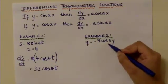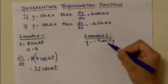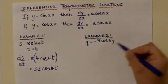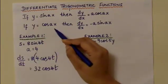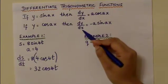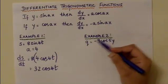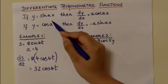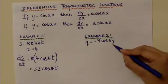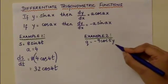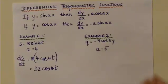Similarly, for the cosine function: q equals minus 9 cos 5y. To differentiate this, we use the formula: if y equals cos ax, then dy over dx equals minus a sin ax. In this case, a is the coefficient of the variable y, which is 5. Therefore a equals 5.